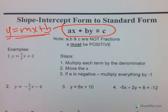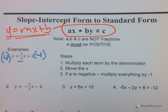Number one is y equals three-fourths x plus two. Step one: multiply each term by the denominator. The denominator here is the bottom number, which is four. So you're going to multiply every single term by four — this by four and the y by four. If you multiply three-fourths by four, that just cancels out, because the whole point is to cancel out your fraction.